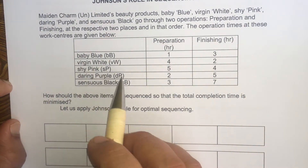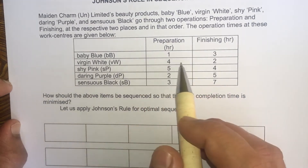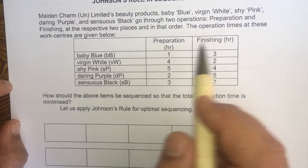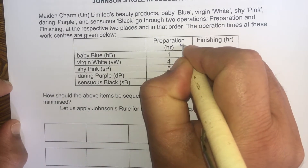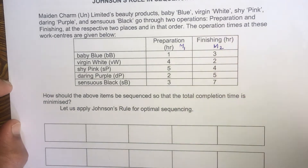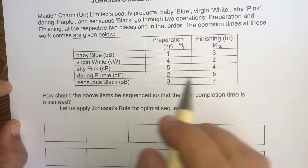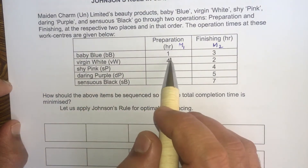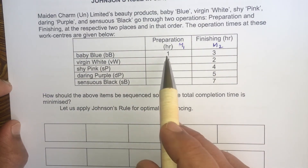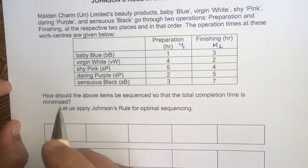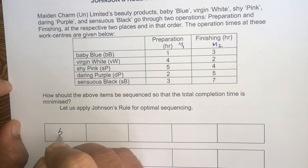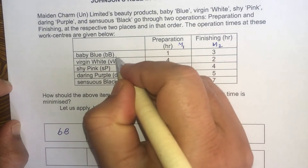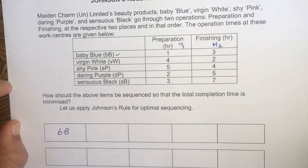Looking at the problem, find out which job takes the least amount of time and in which machine — M1 or M2. Baby Blue takes the least amount of time, in Machine 1, just 1 hour. So you sequence Baby Blue as first. We are done with Baby Blue, so ignore it going forward.